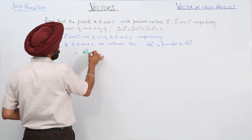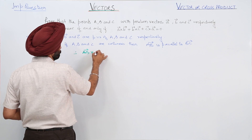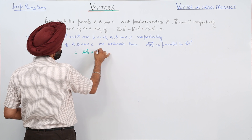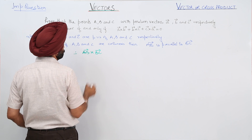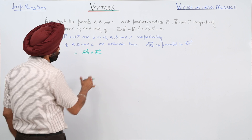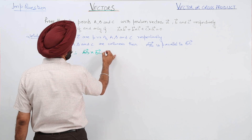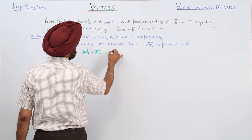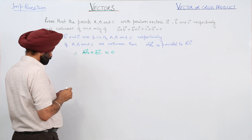Therefore, the cross product of vector AB and vector BC is equal to zero.